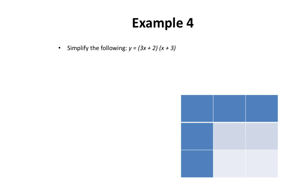In our fourth example, we want to simplify: y equals 3x plus 2 multiplied by x plus 3. This is a more complicated question, but we're going to use the same steps. Let's write the first binomial into the chart — 3x and positive 2. Down here I have x and positive 3. If it makes you more comfortable, you can write a number 1 in front of the x.